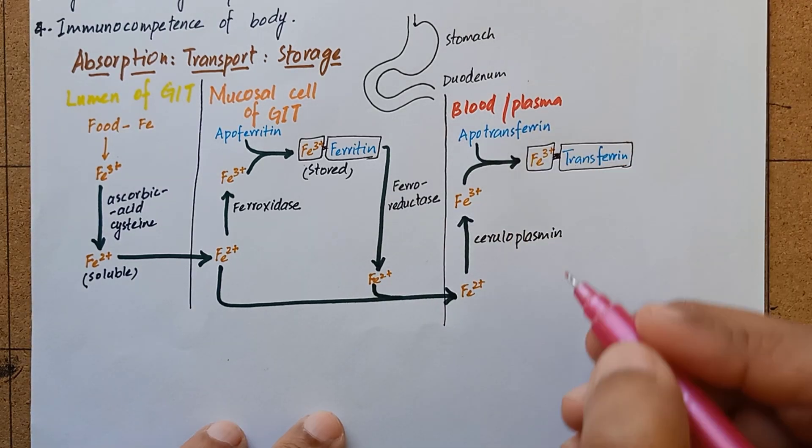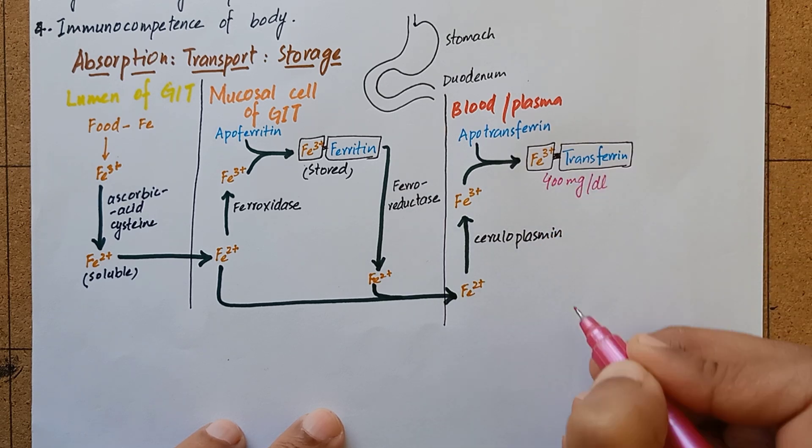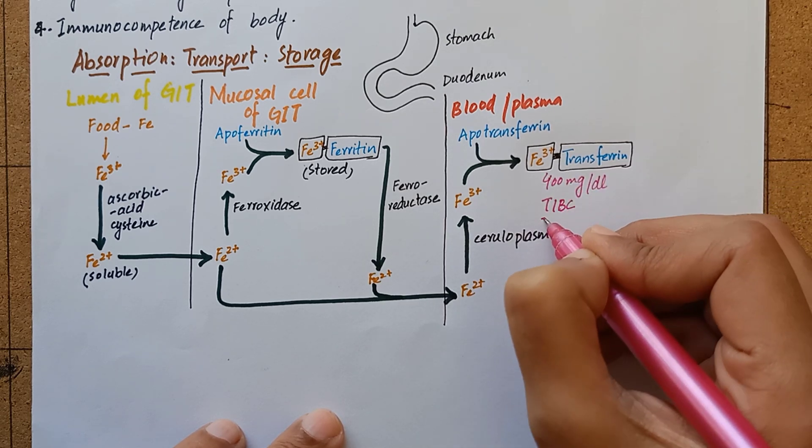Transferrin can bind with 400 mg of iron per deciliter of plasma. This is known as total iron binding capacity of plasma.